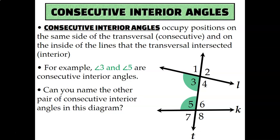The last special kind of angle pair for this type of diagram is called consecutive interior angles. Consecutive means they're on the same side of the transversal. Angle 3 and angle 5 are both on the left-hand side of line T, making them consecutive, and they're in between lines L and K, making them interior. The other pair is angle 4 and angle 6 — both on the right-hand side and in between line L and line K.